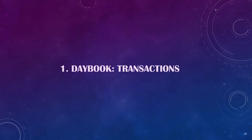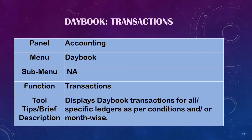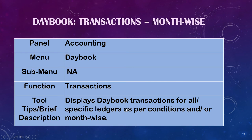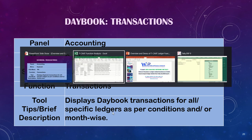First, let's look at daybook transactions. Daybook transactions is in the accounting panel, under the daybook menu. The function primarily displays daybook transactions for all or specific ledgers as per conditions or month-wise. You also have daybook transactions extract, where you can extract specific ledgers as per conditions or month-wise, and daybook transactions month-wise to extract for all specific ledgers per month.